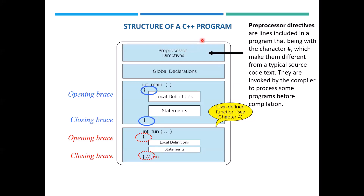This is the basic structure of a whole C++ program. We have different blocks showing different steps that need to be done before we start programming. First of all, we have to include some preprocessor directives. The reason for using these preprocessor directives is to include source code that is important for the C++ program to use before it compiles the main code.